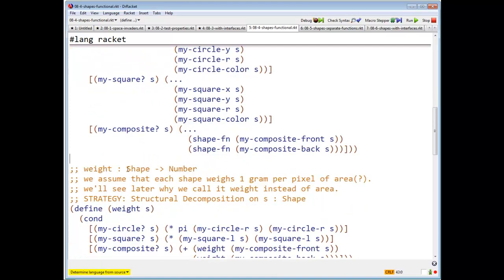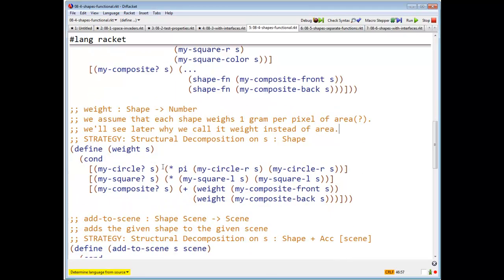So here's weight, which is shape to number. I'm going to assume that every shape weighs one gram per pixel of area. We'll see later on why we call it, well, we'll actually see in a minute why we call it weight instead of area. So if it is a circle, it is pi r squared. If it is a square, it is the square of length.